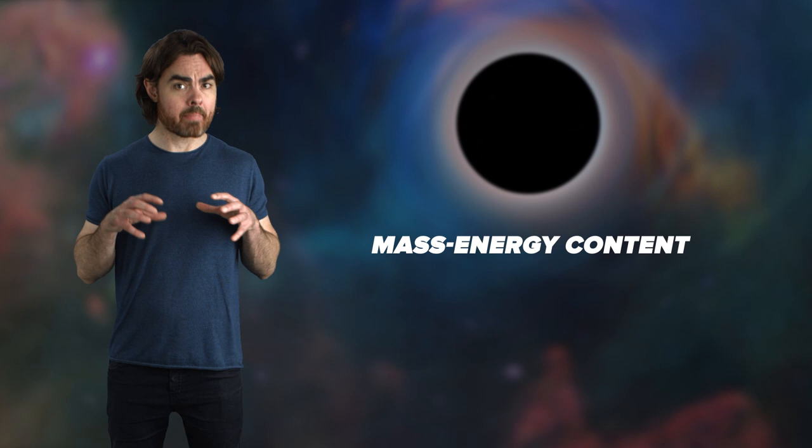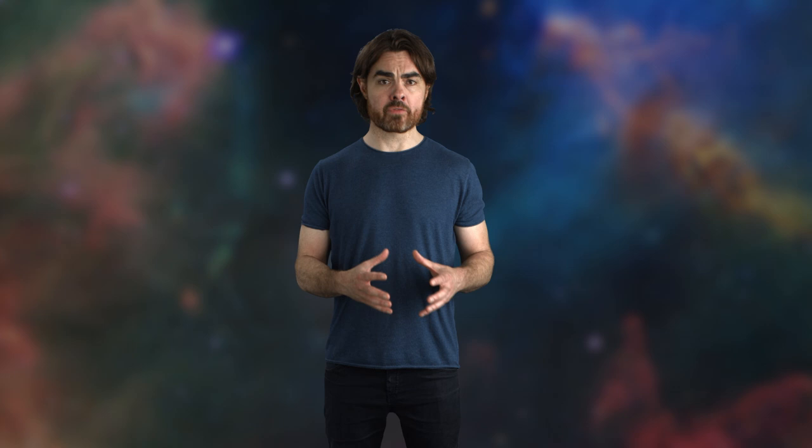The black hole could have formed from a collapsed star or entirely out of antimatter or photons or monkeys. The only thing we could know about the material that went into the black hole are its mass energy content, electric charge, and angular momentum. Given the one-way nature of the event horizon, the loss of this information makes some intuitive sense.